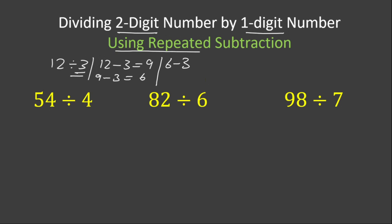6 minus 3 equals 3. And finally, 3 minus 3 equals 0. How many times did we subtract? 1, 2, 3, 4. So we can write down that 12 divided by 3 equals 4.